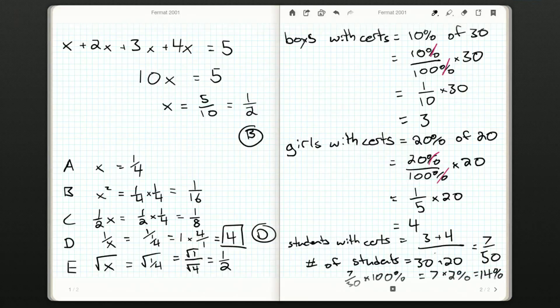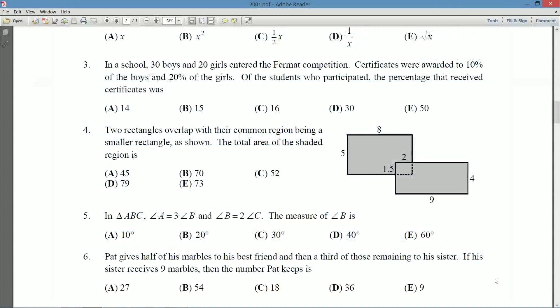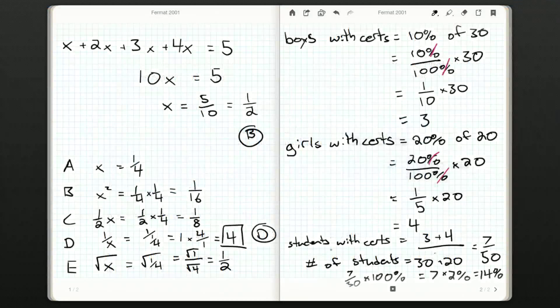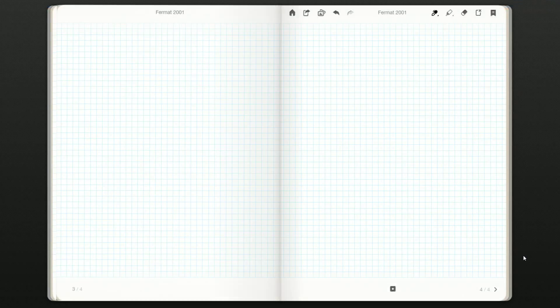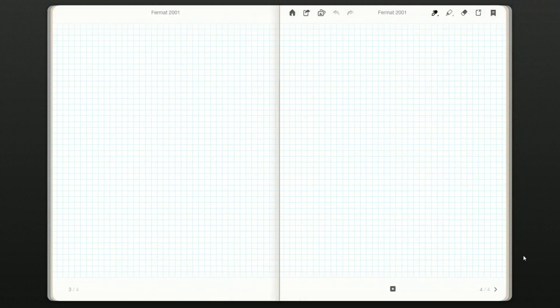Hopefully 14% was one of the possible answers. We're just going to check. Yep. It was answer A. So 14%. So our answer is going to be A. So that was question 3. We had to understand how to use percentages, how to convert them into a fraction, and how to convert a fraction back to percentages. These should be basic things. I mean, these are the early questions on the 2001 Fermat. But if you need a refresher, that's what I'm here for. So we're going to take a look at question number 4 in the next video, and I hope to see you guys then.